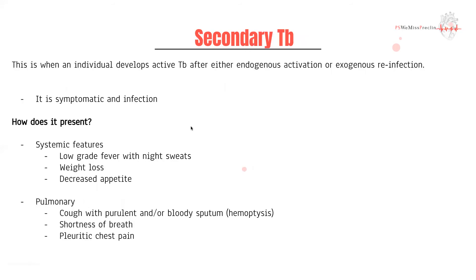Secondary TB means the person has developed active TB after either endogenous reactivation — where they had latent infection that something reactivated — or exogenous reinfection. It's important that secondary TB is symptomatic and infectious. It can present with systemic features like fevers, night sweats, weight loss, and loss of appetite, but more importantly pulmonary symptoms like cough — which can involve bloody sputum — shortness of breath, pleuritic chest pain, and so on.